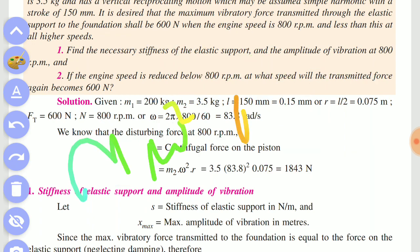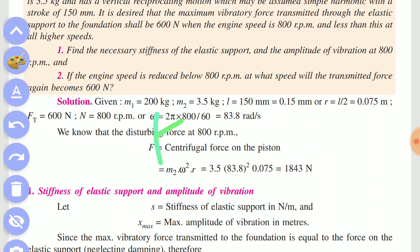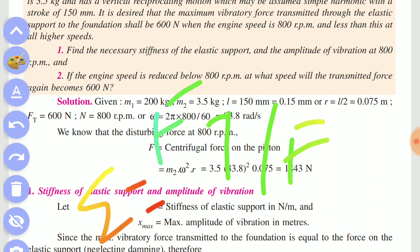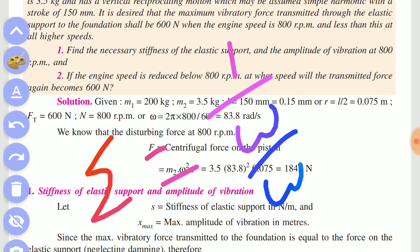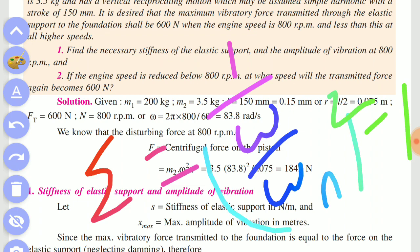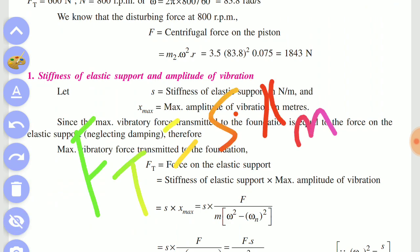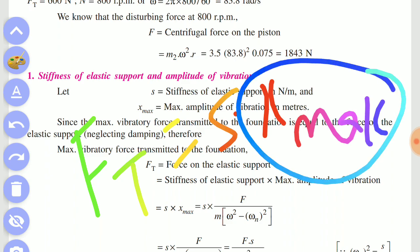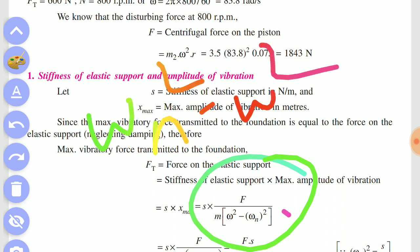M1 times omega squared times r, where M1 is 3.5 kg. The transmissibility formula involves 1 divided by (omega/omega_n)^2 minus 1. For x_max, the formula is: x_max equals F divided by m times (omega_n^2 minus omega^2).